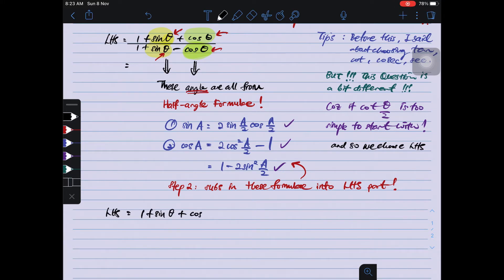Step 2: what you need to do is just sub in the formula into the left hand side part. So I apologize here, I have been using the formula, which is sin A, I put in 2 sin A over 2 cos A over 2. I should have used theta, but I accidentally used A. So it's okay, just proceed. And then, oh my god.